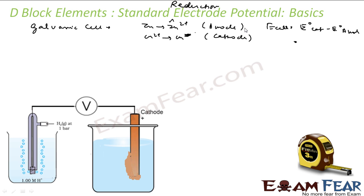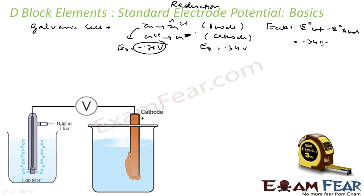E_reduction of cathode — my positive electrode is copper. E⁰ for copper is 0.34 volt and E⁰ for zinc is minus 0.76 volt. So the net E equals E_cathode (0.34 V) minus E_anode (−0.76 V), and doing the math you get 1.1 volt.